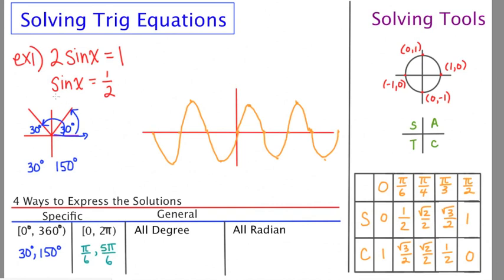So this would be y1 if we were using our graphing calculator, a sine wave, and there it is in orange. And now this on our graphing calculator would be y2, which would be a horizontal line at one half. So I'm going to sort of just approximate that.